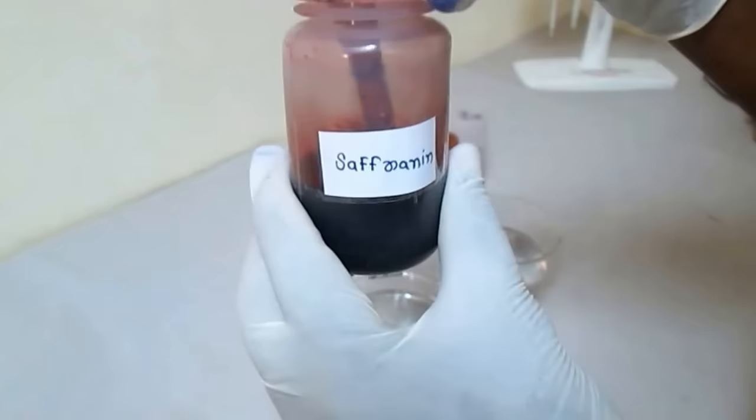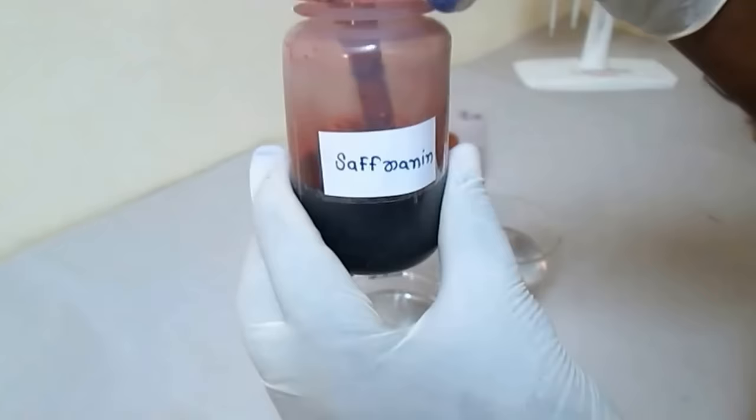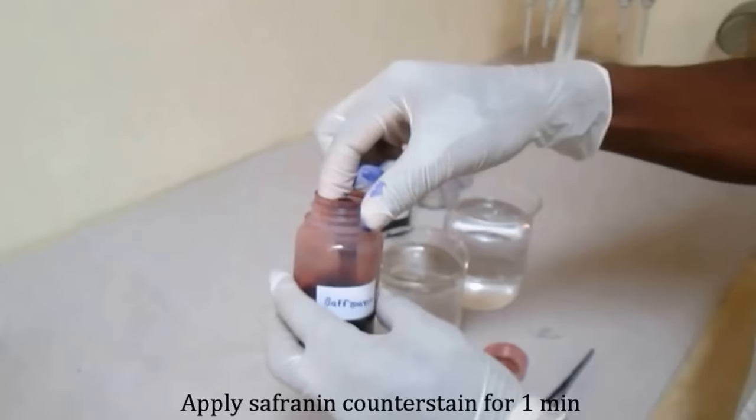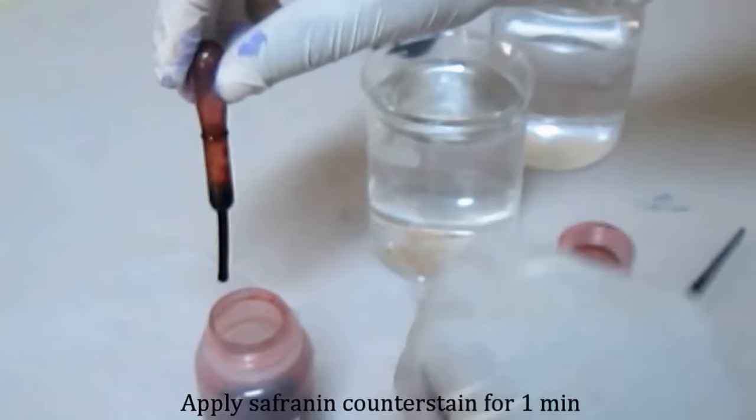Safranine, it is a counter stain. It is red in color. By the application of safranine, gram positive becomes purple color and gram negative becomes red or pink in color. Apply the safranine on the smear and leave it for one minute.